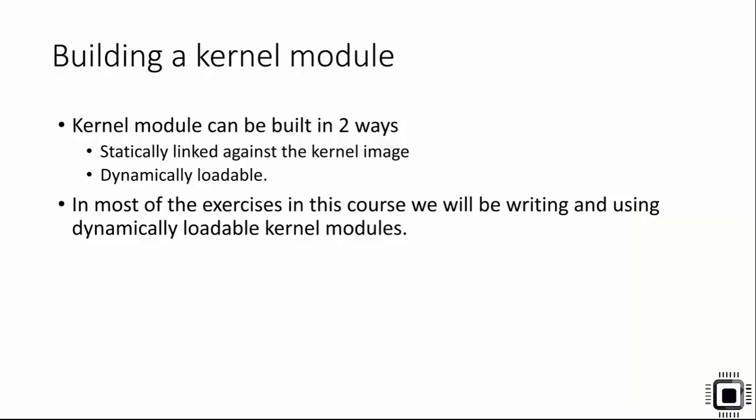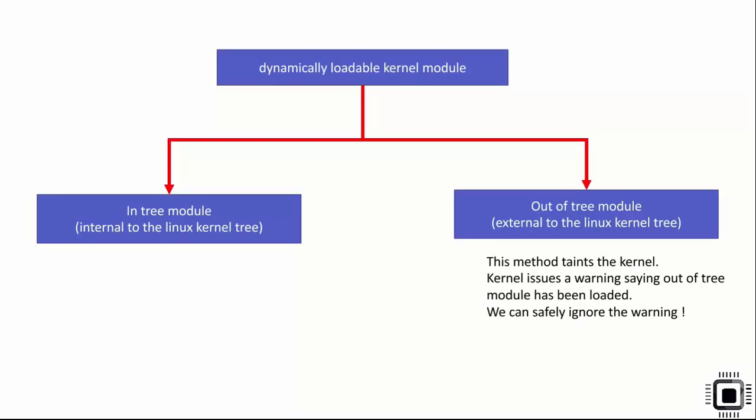In this lecture let's learn how to build a kernel module. A kernel module can be built in two ways: statically linked against the kernel image, or built as a dynamically loadable kernel module. In most exercises in this course we'll be writing and using dynamically loadable kernel modules. There are two types of dynamically loadable kernel modules: in-tree modules and out-of-tree modules.